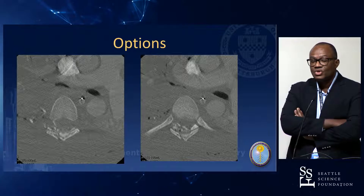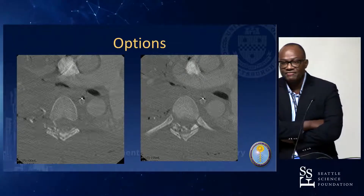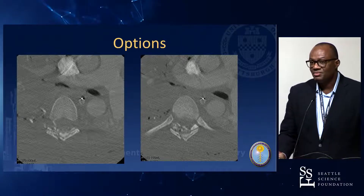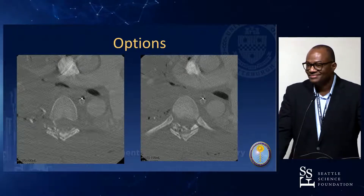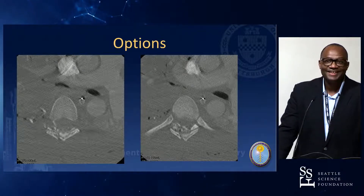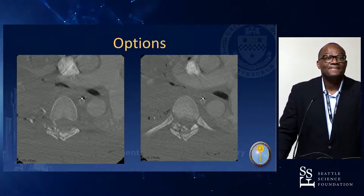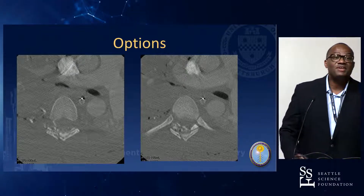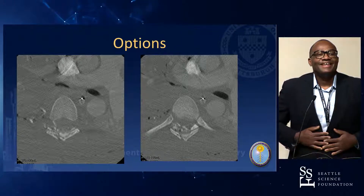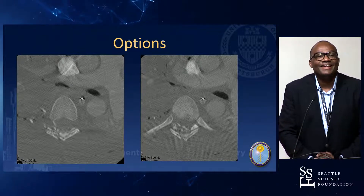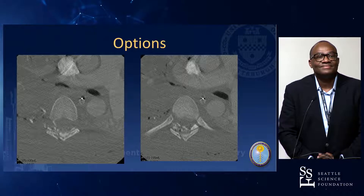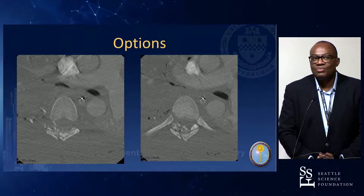Is there concern about him developing a kyphotic deformity? One faculty member states there is zero indication that you ever operate on a kyphotic deformity from a penetrating injury in the spine. There's debate — others disagree, noting cases with three-column disruption from gunshot wounds where patients developed extreme kyphosis and worsening neurological function.